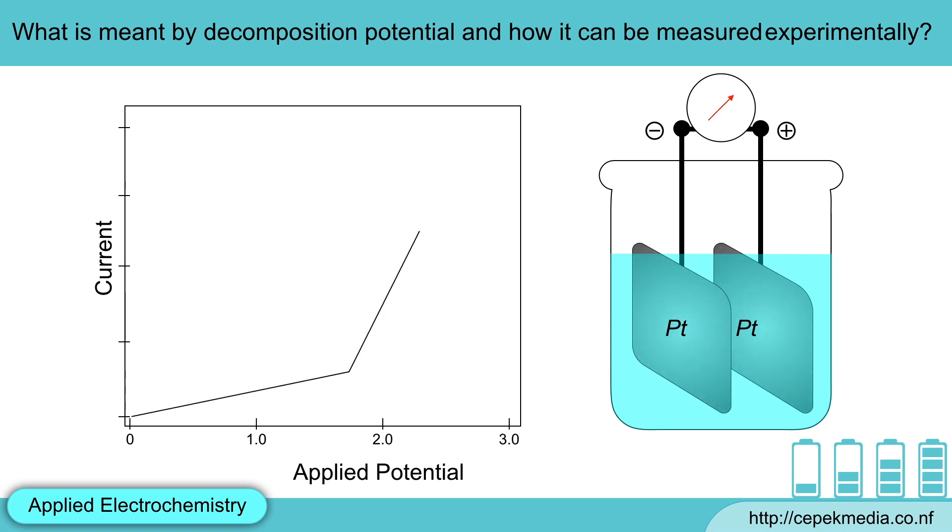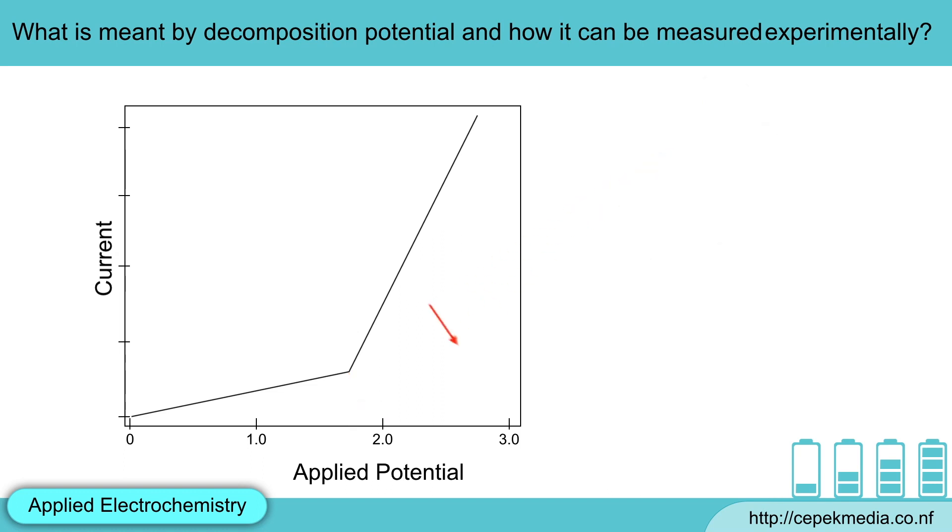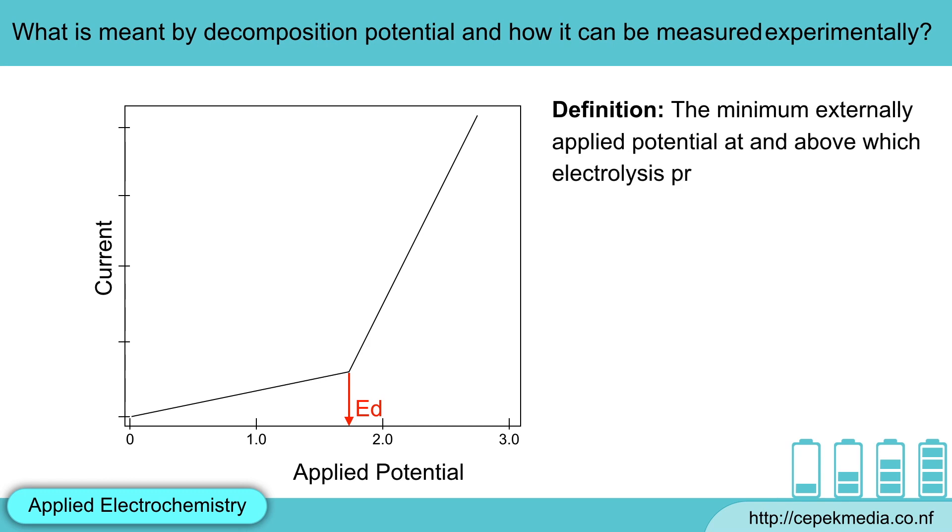If we plot a graph of current versus applied potential, the nature of graph is something like this. The current increases slowly till applied potential is 1.7V and later on it increases rapidly. So, let's define decomposition potential. The minimum external applied potential at and above which electrolysis proceed continuously is known as decomposition potential ED.